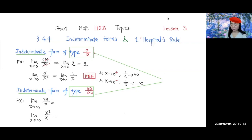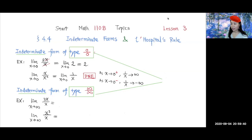This is called an indeterminate form of type 0 over 0. It's called indeterminate because it's not determined yet — we don't know whether the result does not exist or is equal to a certain number. So if you encounter this type of limit, don't jump to a conclusion about what the limit will be.